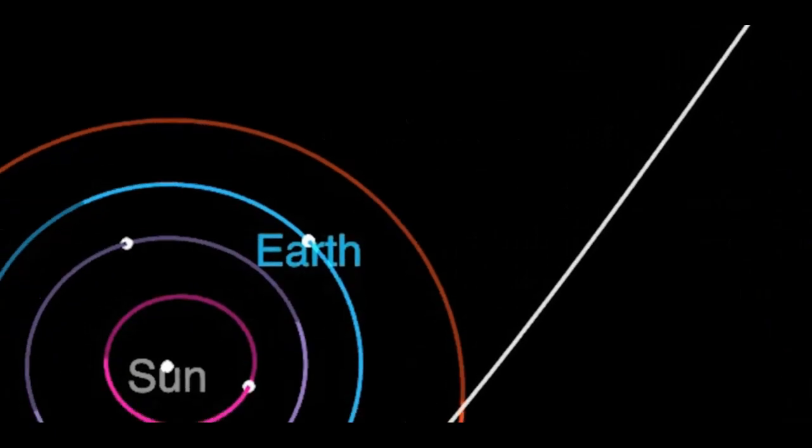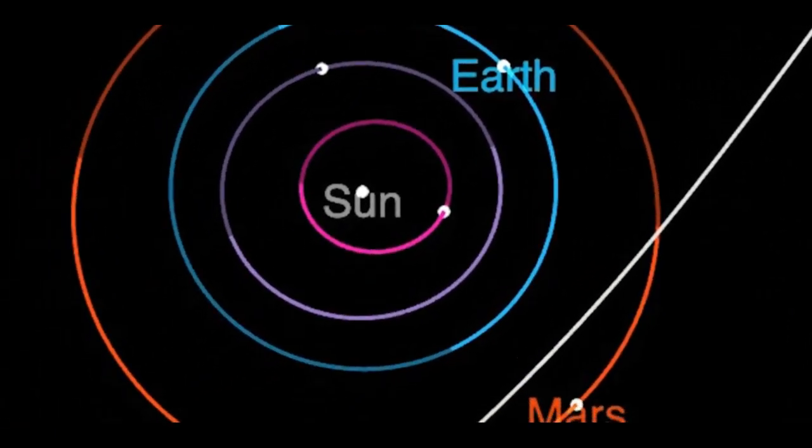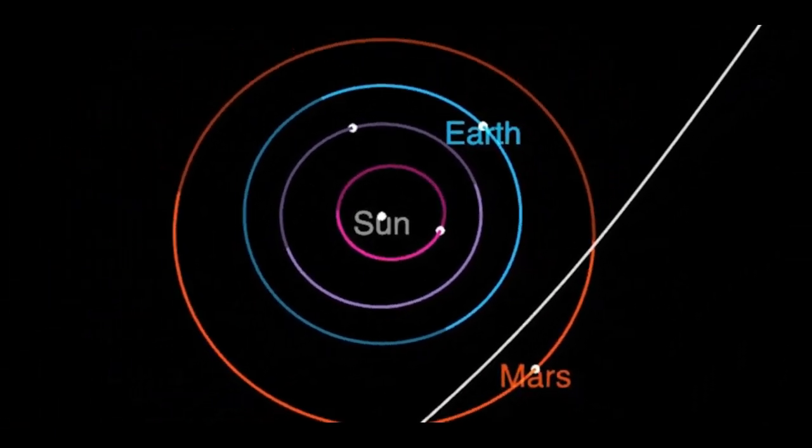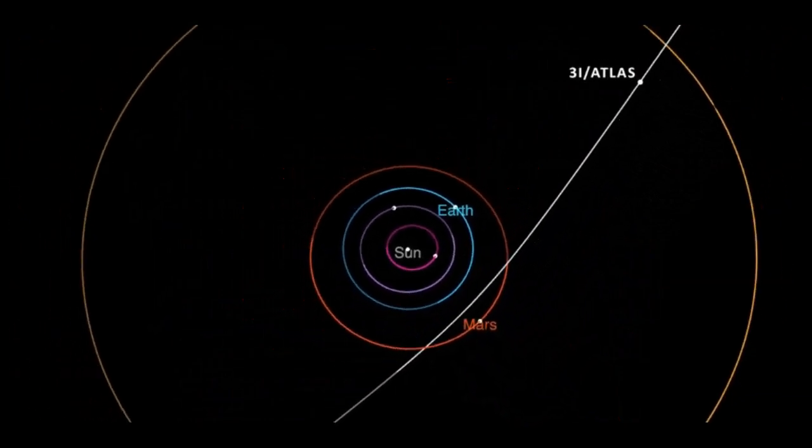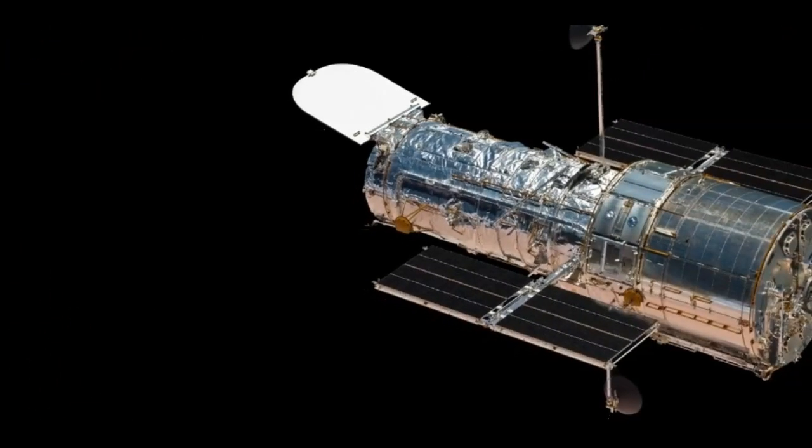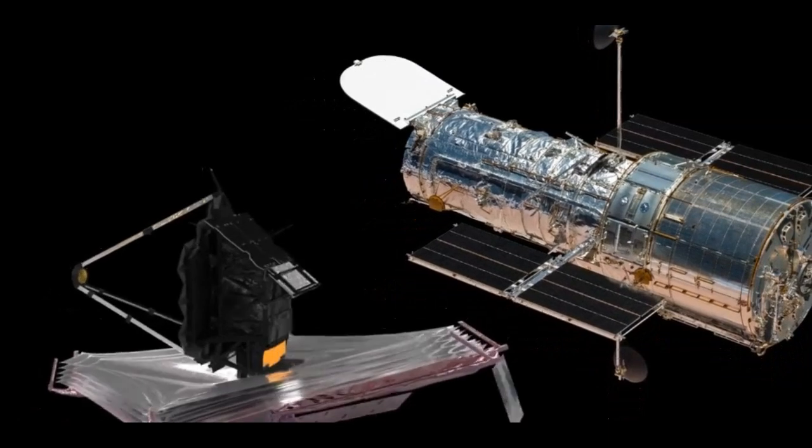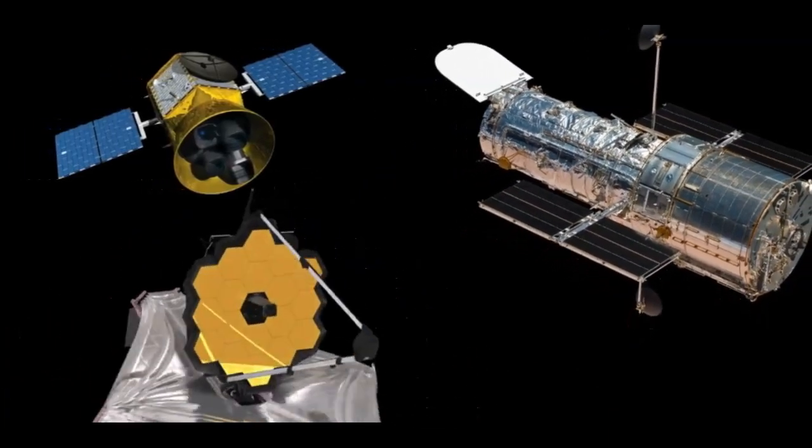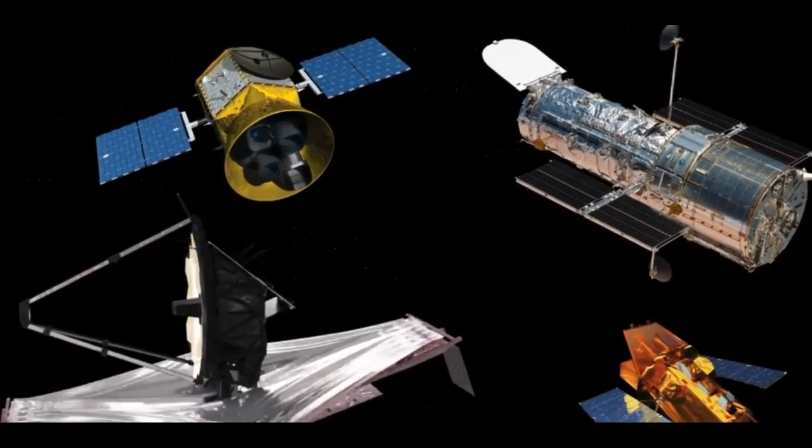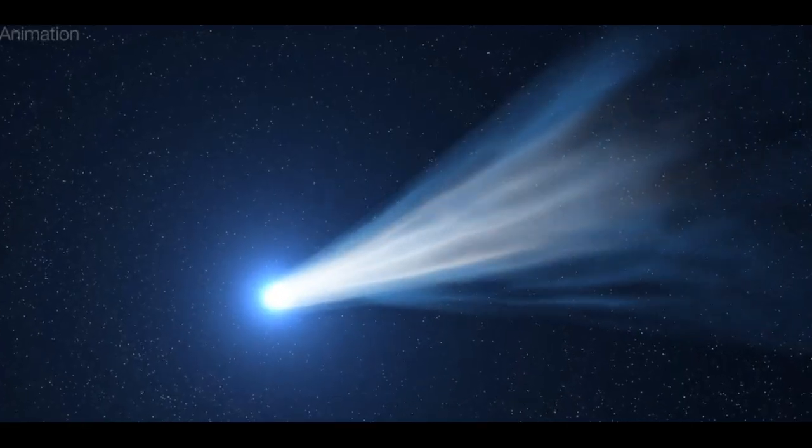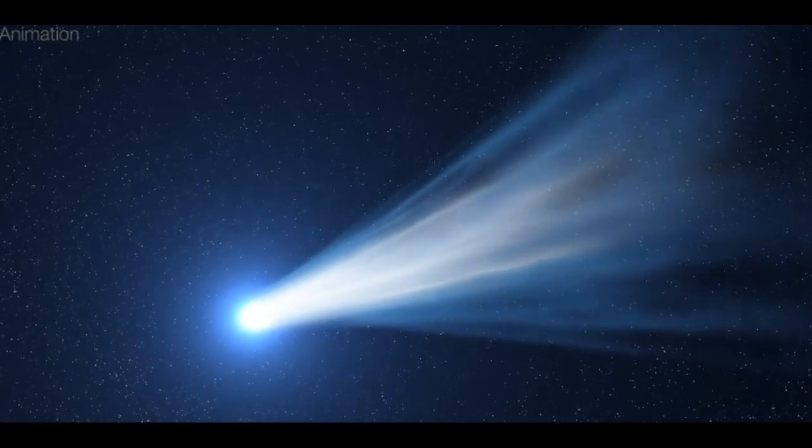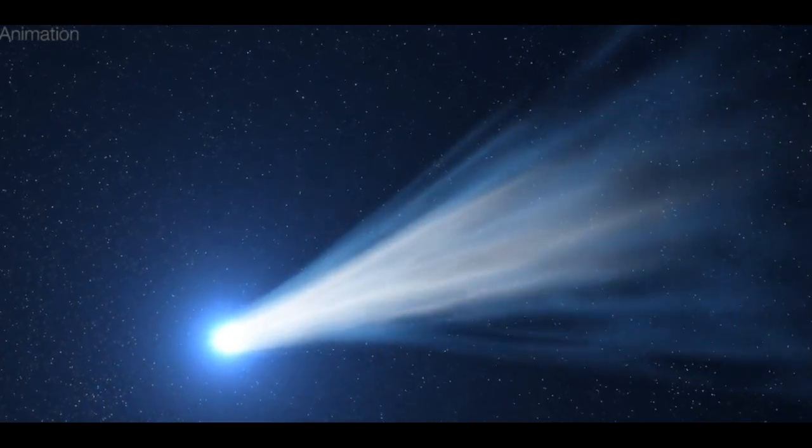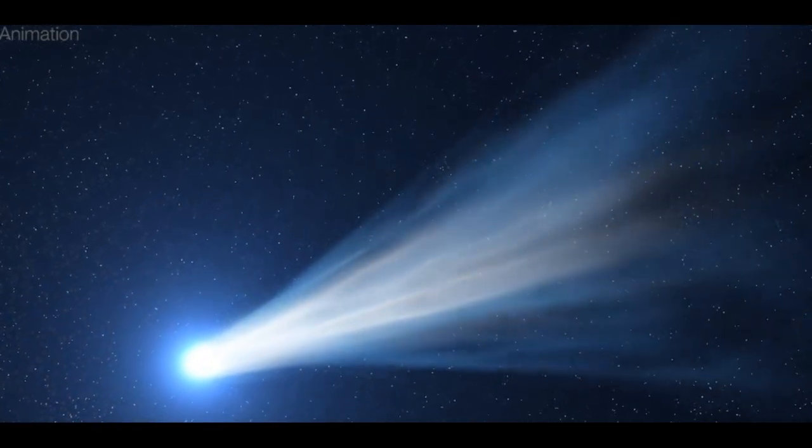Comet 3I Atlas will make its closest approach to the sun in October 2025, but don't worry, it won't be anywhere near Earth. NASA's assets, including Hubble, the James Webb Space Telescope, the Transiting Exoplanet Survey Satellite, and the Swift Observatory, will closely monitor the comet to measure its chemical composition as the sun's heat further sublimates its ices.